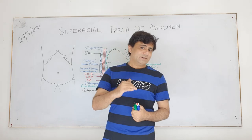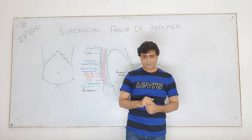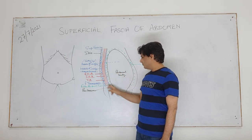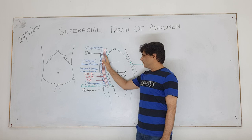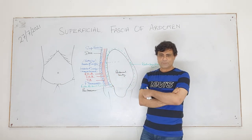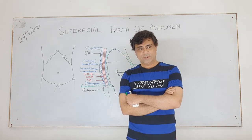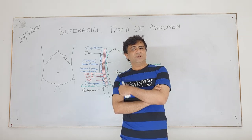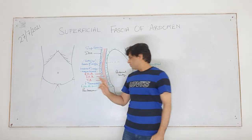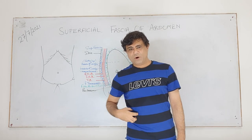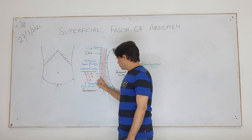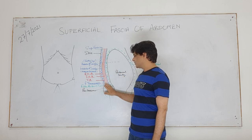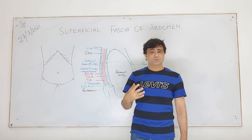This goes against the convention we study throughout the body - that muscles lie below the deep fascia. Here you have seen that the deep fascia of the abdomen lies behind these muscles. So shouldn't we call these muscles subcutaneous muscles? Because the muscles of the anterior abdominal wall lie between the skin and the deep fascia, making them contents of superficial fascia.